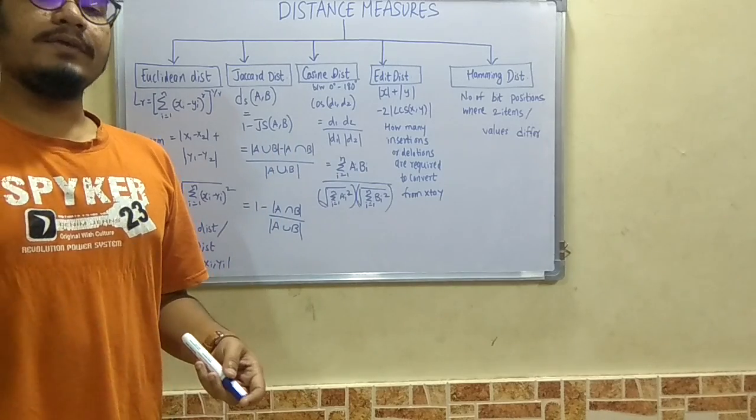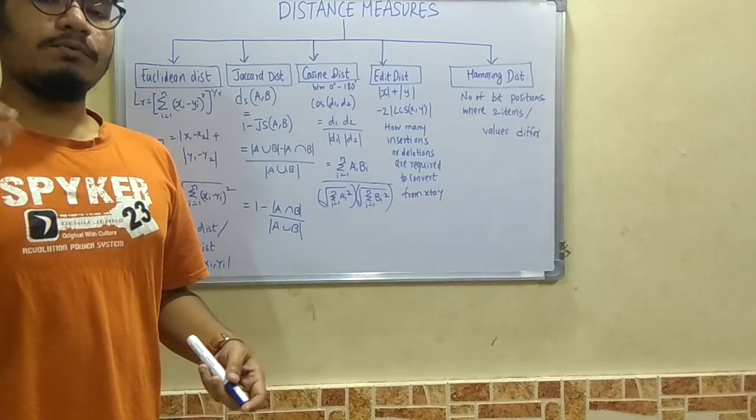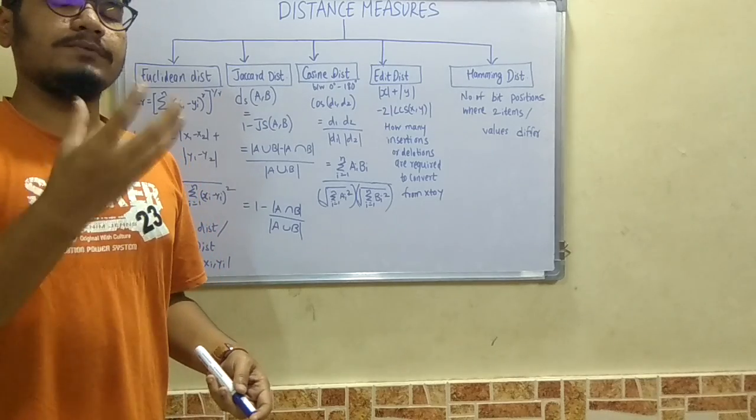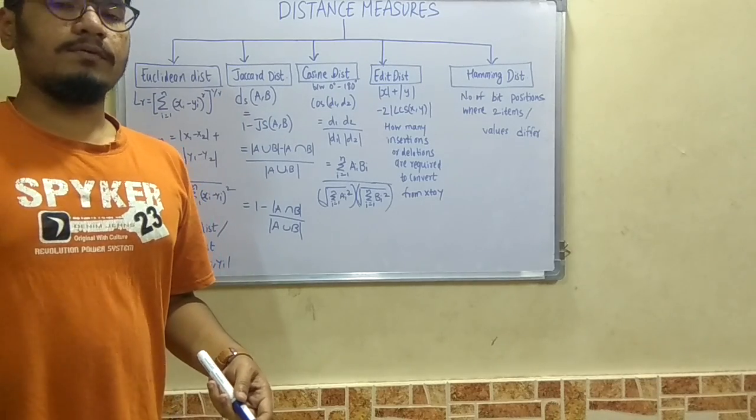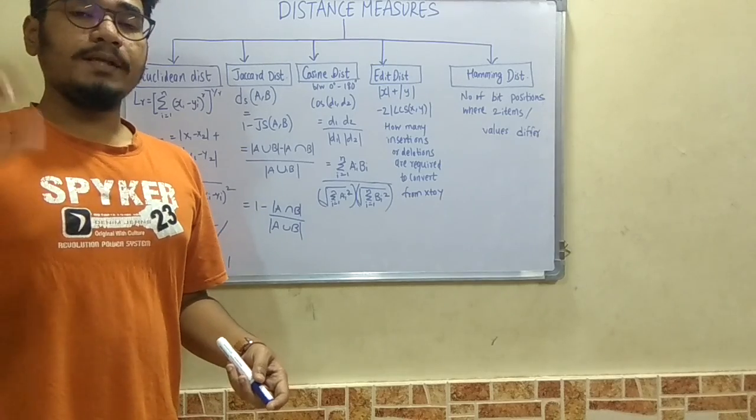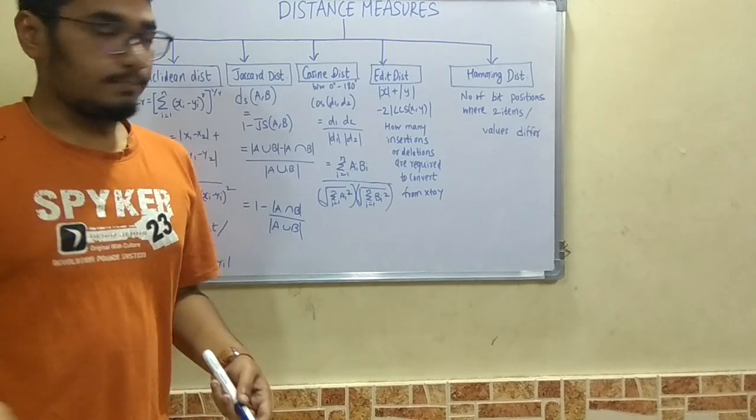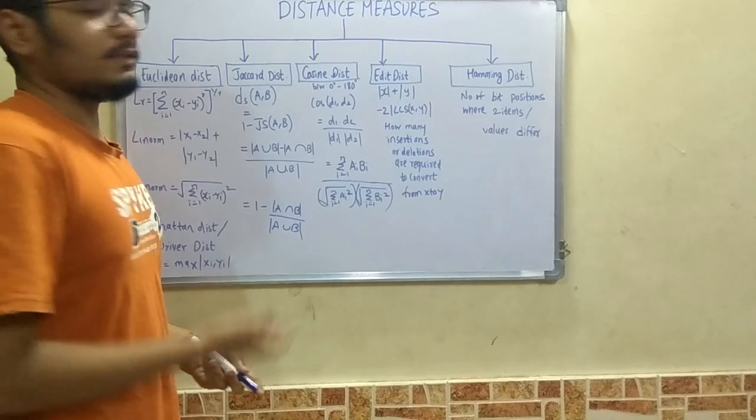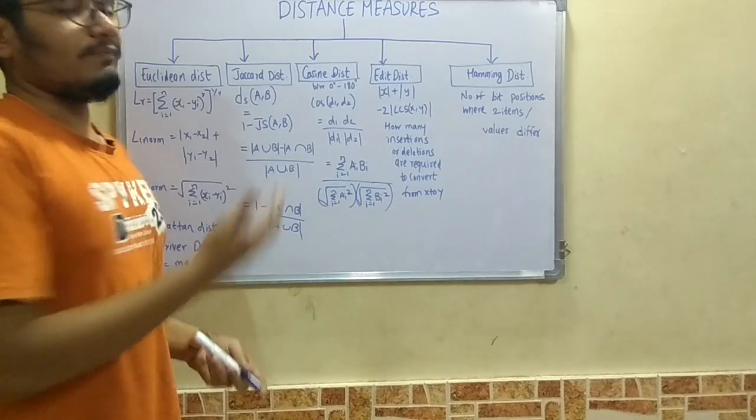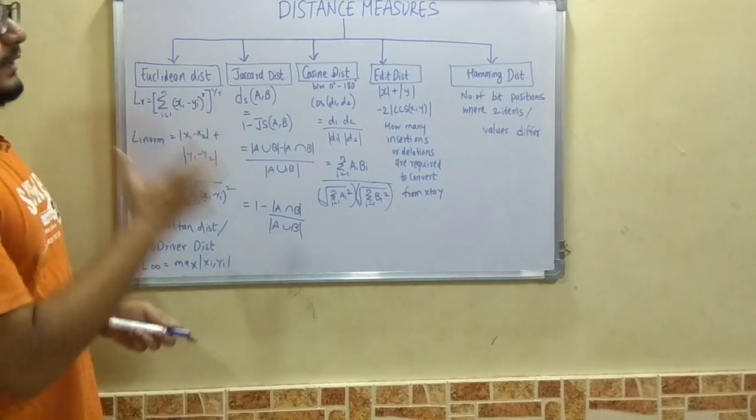Hamming distance is calculated as the change or variation between two different points. For example, if two different points 0 1 0 and 0 1 1 are given, we calculate how many bit positions these two variables are changing. It is the number of bit positions where the two items or values differ. So these are the five distance measures.